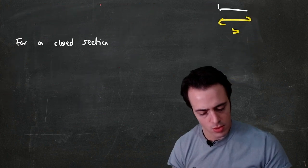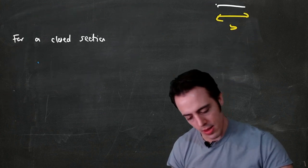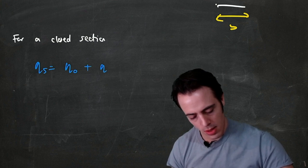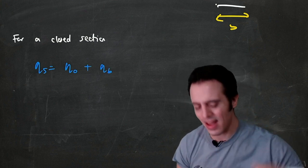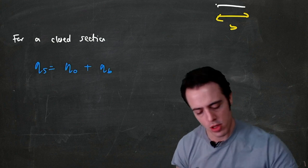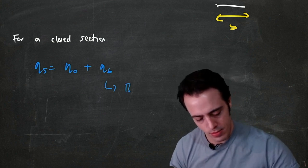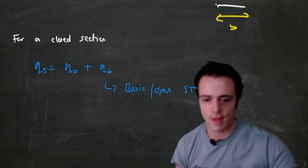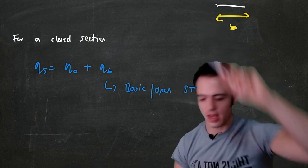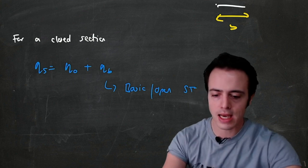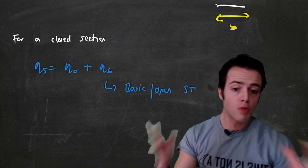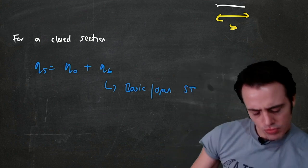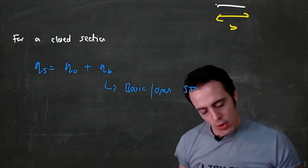For a closed section things are a little different. We change the shear flow slightly: qs is equal to q-naught plus qb, where b stands for 'basic' — sometimes called the open shear flow. This is exactly the same as the open shear flow distribution we used previously.